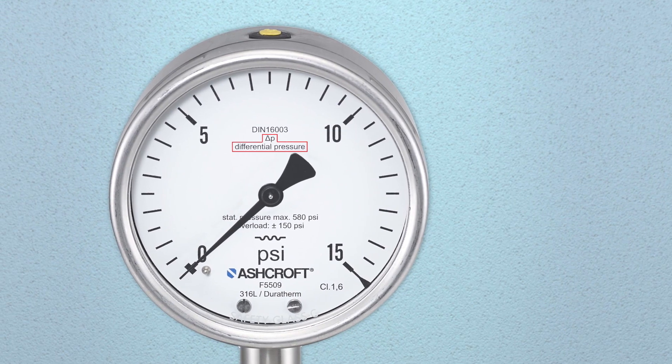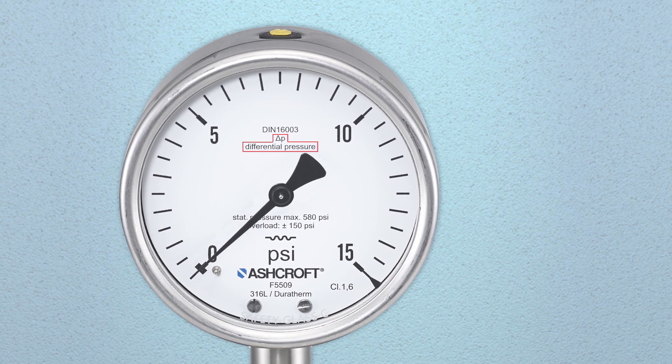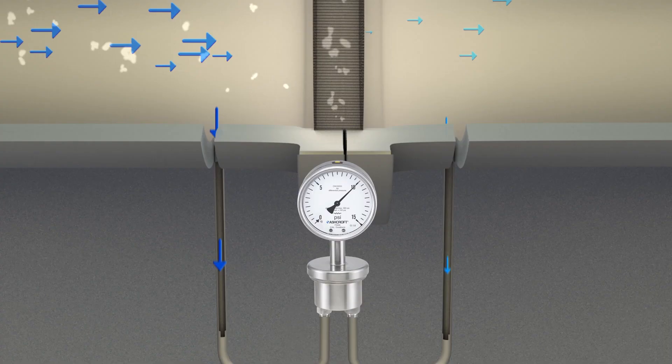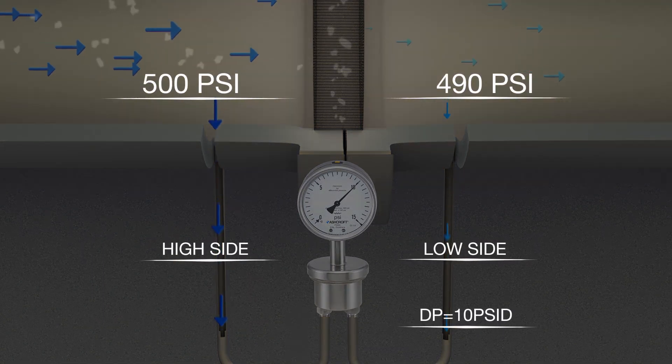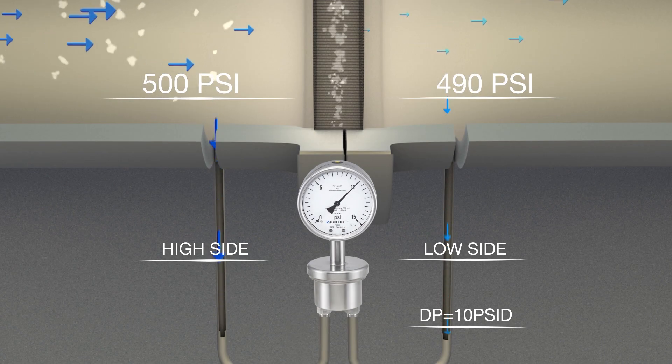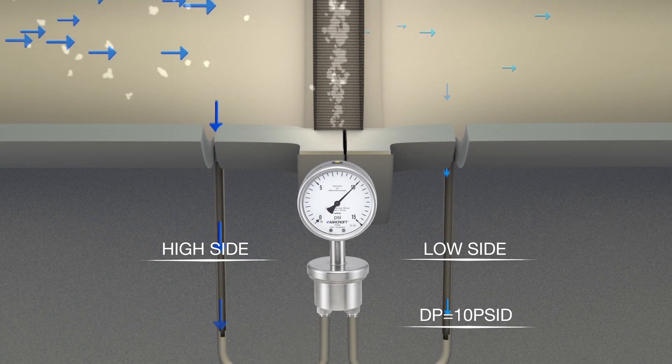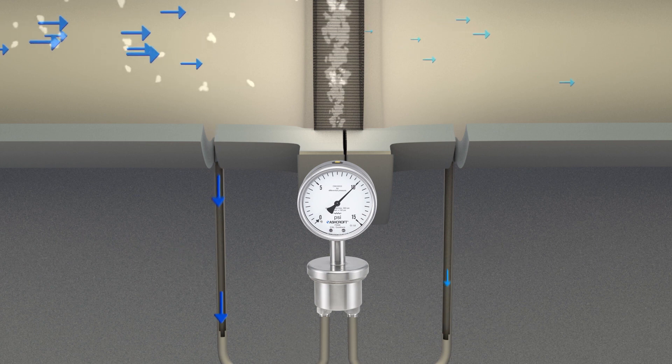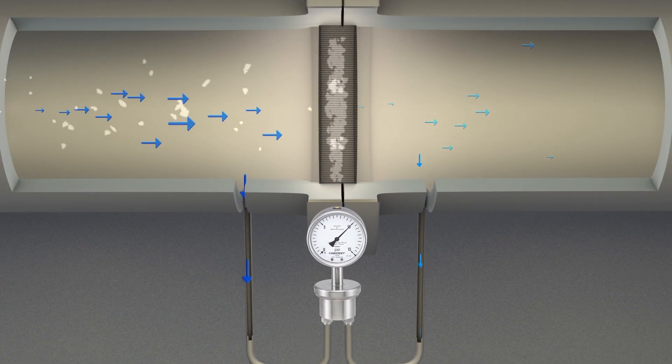The first is the DP range, which is based upon the most difference in pressure that the restriction is likely to produce. The second is the instrument's ability to contain the static pressure, which is simply the pressure in the line. While the differential pressure remains the same, a higher line pressure may require a gauge rated for higher static pressure.